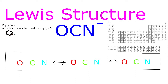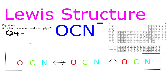Our supply is how many valence electrons each atom can actually contribute. Oxygen is found in group 16, so it contributes 6. Carbon is found in group 14, so 4. Nitrogen, group 15, so 5. And we cannot forget we have a negative on our molecule, so we have to add another electron. So 6 plus 4 is 10, plus 5 is 15, plus 1 is 16. So 24 minus 16 is 8, divided by 2 equals 4 bonds.